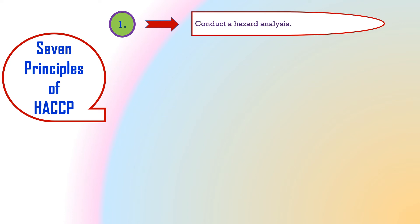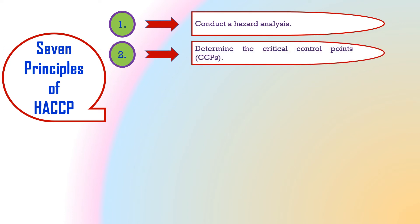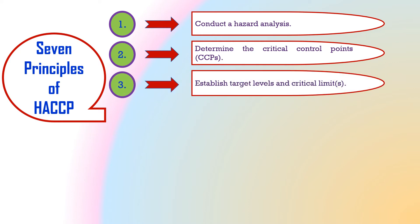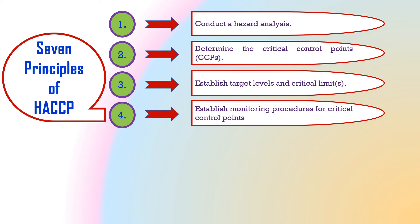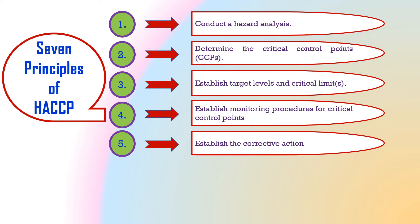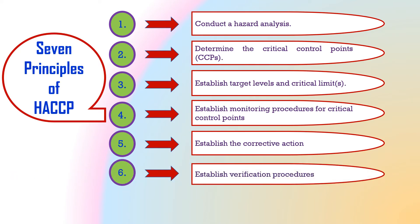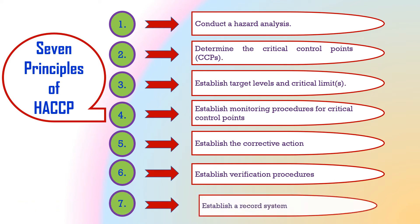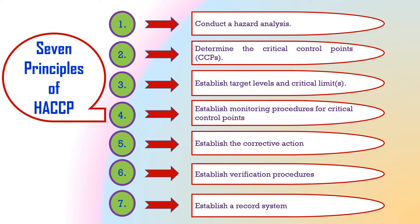HACCP works on seven important principles which are enlisted here one by one. First is to conduct hazard analysis. Second, to determine the critical control points, that is CCPs. Third is to establish the critical limits. Fourth is to establish monitoring procedures for critical control points. Fifth is to establish the corrective action. Sixth is to establish verification procedures. And seventh, most importantly, to establish a record system.